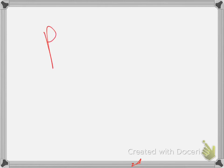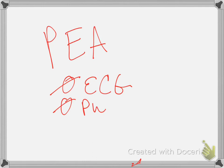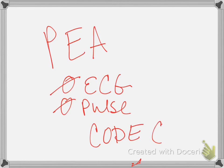We also have pulseless electrical activity, or PEA. There is no organized electrical activity seen on the ECG and no pulse. Common causes include post-defibrillation, hypoxia, hypovolemia, drug overdose, hyper- or hypokalemia, and metabolic acidosis. Our primary treatment is to call a code, start CPR as soon as possible, administer epinephrine, intubate the patient, and treat the underlying cause. That concludes this brief overview of dysrhythmias.